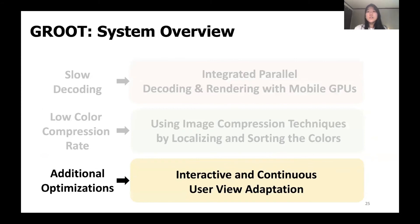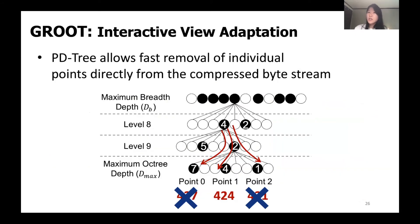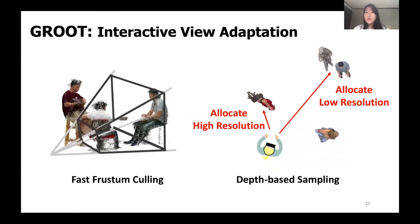Lastly, we could further improve the decoding rate and reduce network bandwidth by applying interactive and continuous user view adaptive optimizations. The key advantage of PDTree is that its parallel representation allows removing and reordering points directly from the encoded byte stream without changing the decoding process. We apply straightforward view adaptive techniques in real time: first, frustum culling, which removes points not shown in the current user's view; and second, depth-based sampling, which allocates higher resolution to closer objects and lower resolution to farther objects. Please refer to our paper for more details.